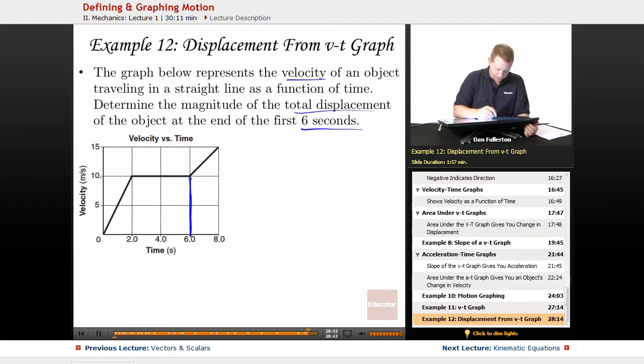So at 6 seconds, we'll draw our line there, we need the area of everything under the graph to the left of that. Again, a couple ways you could do this, but the easiest way that I see right off the top of my head is to break this up into a triangle and a rectangle. The area under that should give us the total displacement.